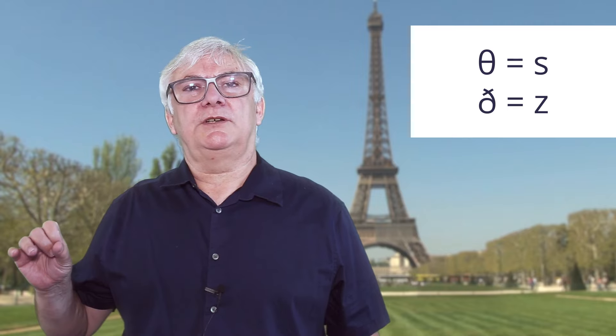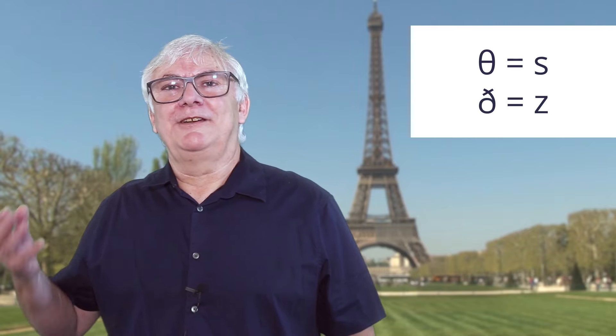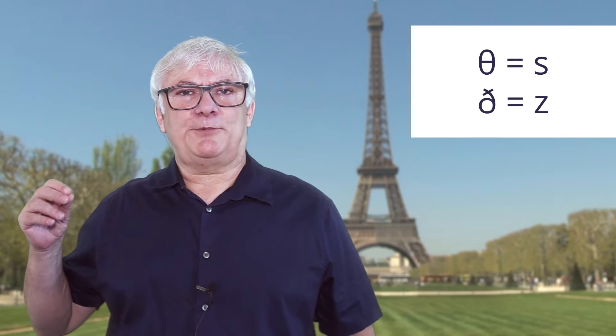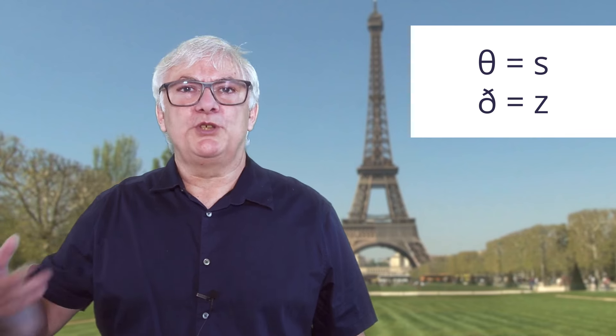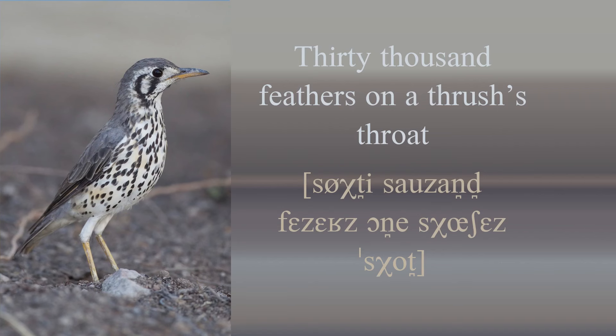So something else you may have heard is the TH sounds in English. We do not have this in French — this is totally unnecessary for a language. So in French, the TH sound is pronounced as 'ze' or 'ze'. So: '30,000 feathers on the thrush's throat.'